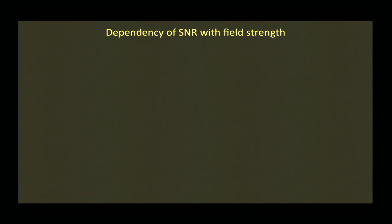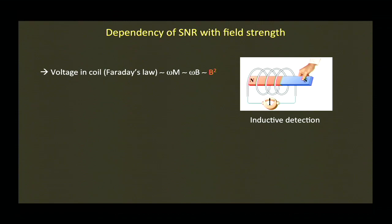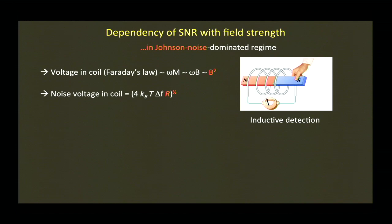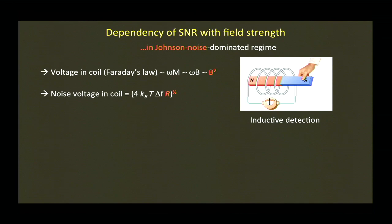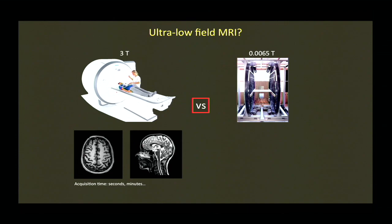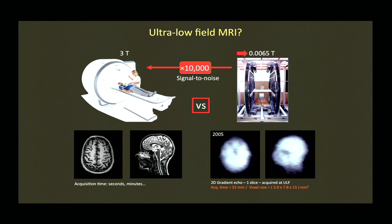How bad is this effect as a function of magnetic field strength? The voltage you detect goes like B squared, and in our regime we are Johnson noise dominated — unlike high-field coils where you're body noise dominated. At low frequency, the noise voltage in the coil sets the noise limit, going like the square root of kTR per unit bandwidth. For a tuned circuit, there's a relationship between R and omega, so SNR ends up going like B to the three-halves. That's a strong function of field — about 500-fold lower field means roughly 10,000-fold lower SNR.